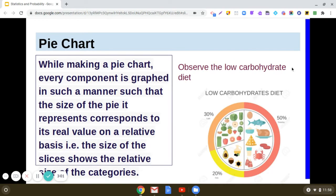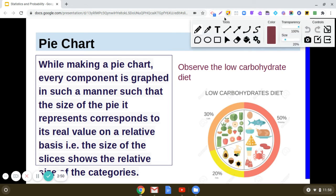Let us take an example. Here you can see a pie chart representing a low carbohydrate diet. Fifty percent represents protein, 20 percent represents fats, and 30 percent represents carbohydrates. All these three portions are represented on a circle.